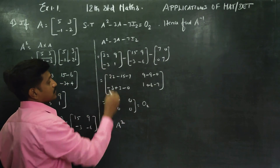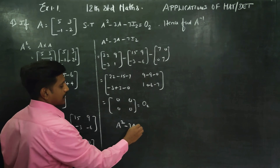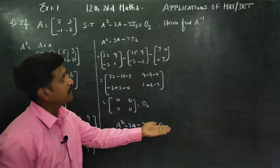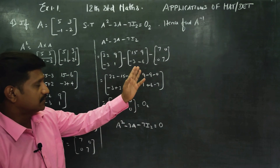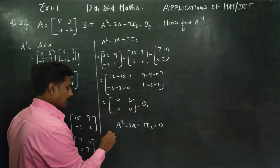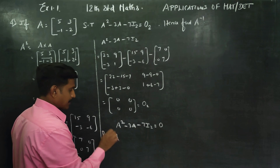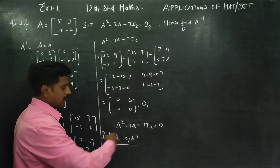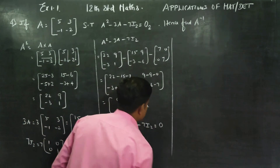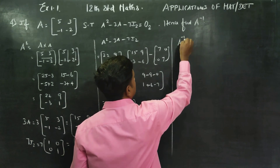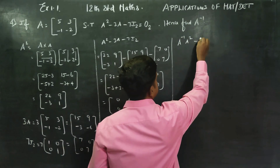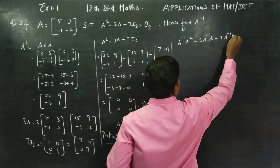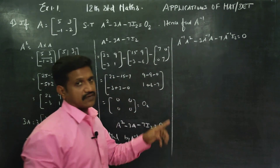From A² - 3A - 7I₂ = 0, we pre-multiply both sides by A inverse. Pre-multiplying by A⁻¹ gives: A⁻¹A² - 3A⁻¹A - 7A⁻¹I₂ = 0.